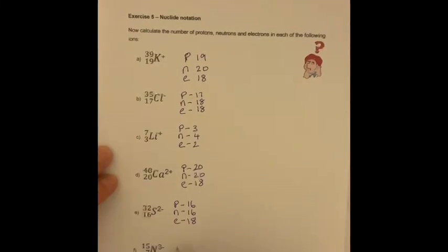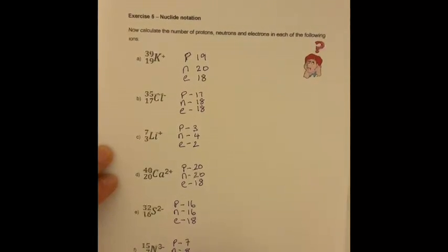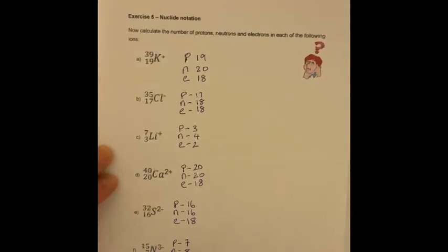And the last one, nitrogen. Again, protons — we're looking for the bottom number — so that's going to be 7. Neutrons: 15 minus 7, so we're going to finish up with 8 neutrons. Electrons: we can see we have three extra negative charges than positive charges, so therefore we must have 10 electrons.